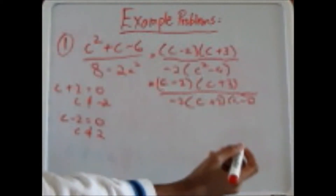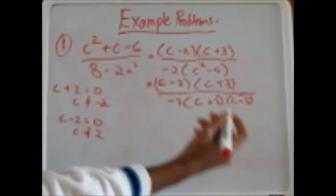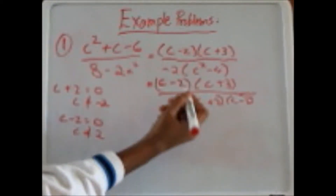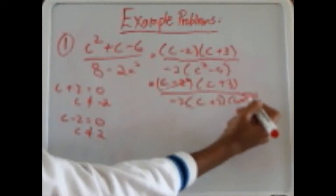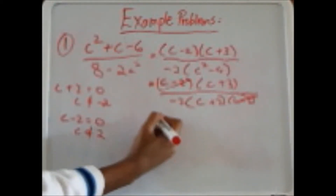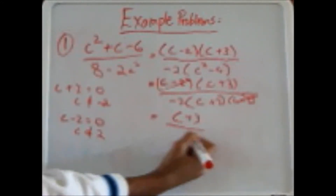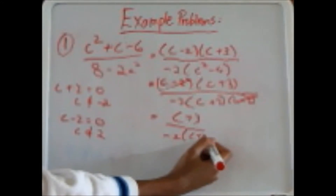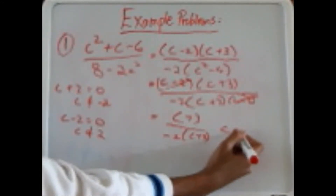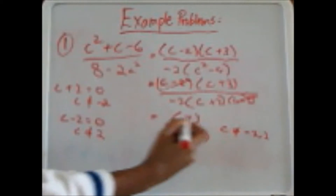Now our third step is to cancel out anything that's in both the numerator and the denominator. The c minus 2 appears on top and bottom, so they cancel out. We are left with c plus 3 divided by negative 2 times c plus 2, where c cannot equal negative 2 or 2.